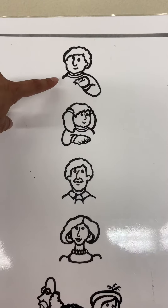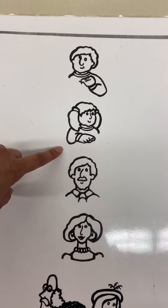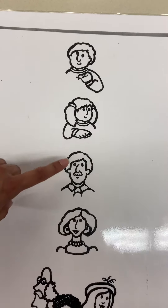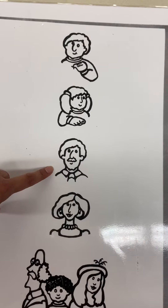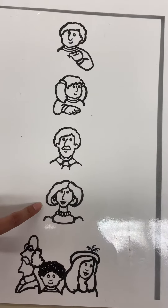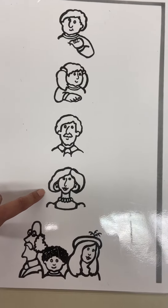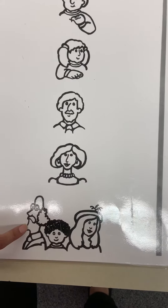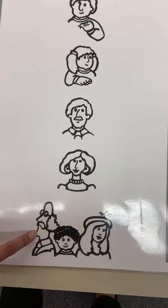When you see this picture, you say I. When you see this picture, you say you. When you see this picture, you say he. When you see this, you say she. And when you see this picture, you say we or they.